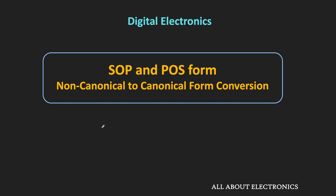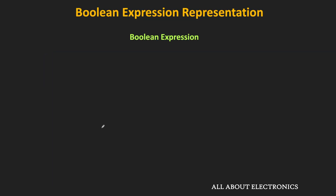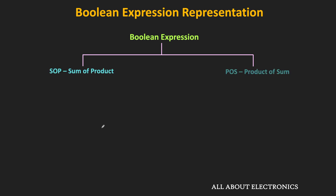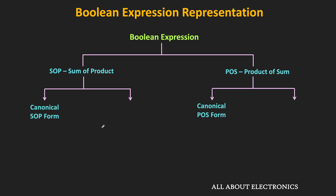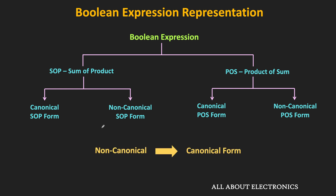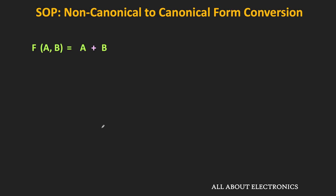Welcome to the YouTube channel all about electronics. In the previous video we saw that a boolean expression is typically represented either in a sum of products form or in a product of sums form, and further we saw that these SOP and POS forms can be classified into two types: canonical and non-canonical. In this video, let us see how to convert the non-canonical form into the canonical form.